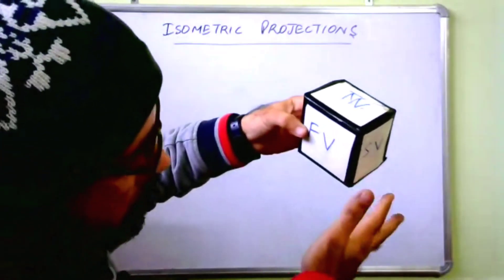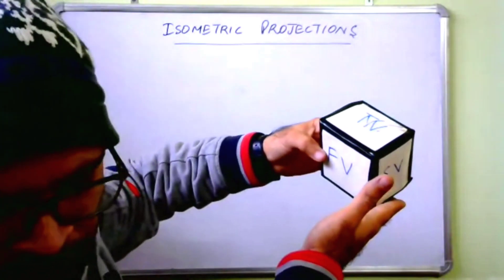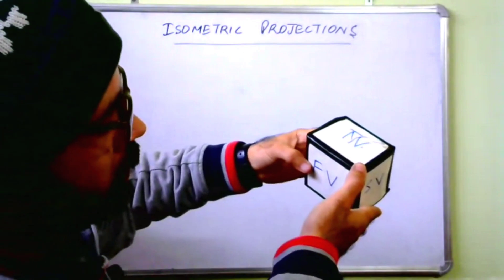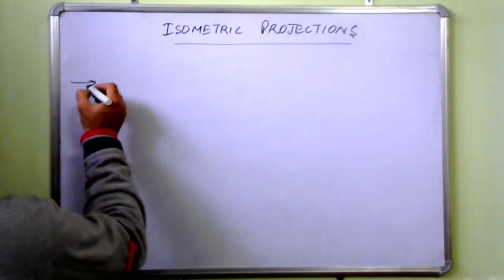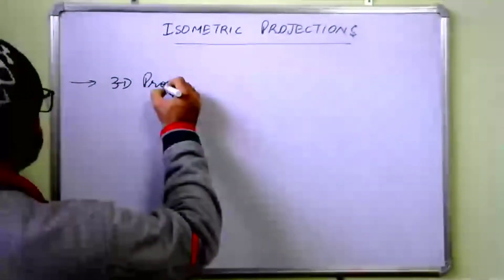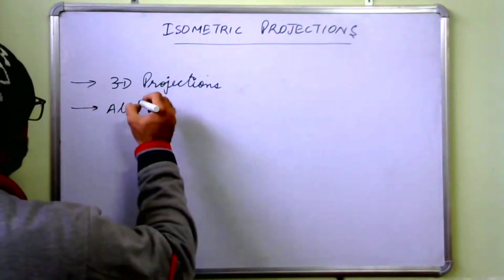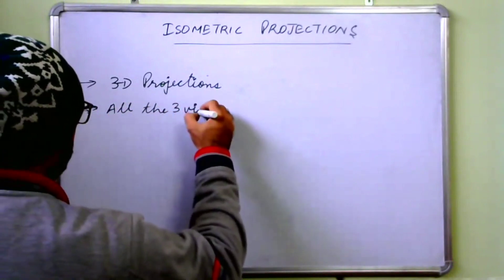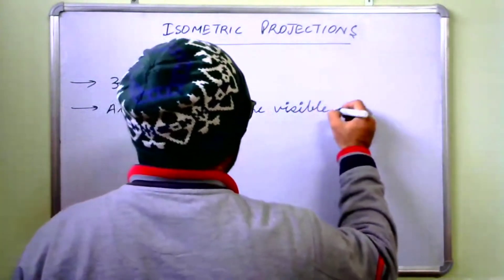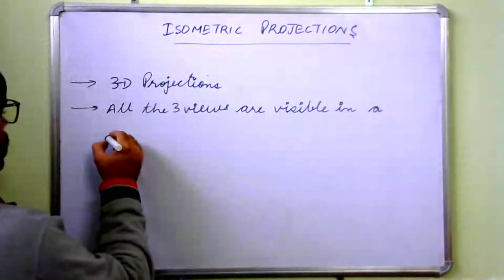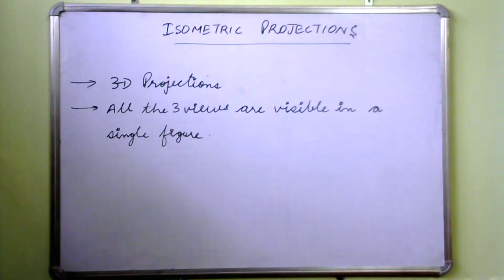If you just look here, you can see the side view, front view, and top view — all three views are visible to you in a single figure. So isometric projections are 3D projections in which all three views are visible in a single figure. This is the definition of isometric projection.